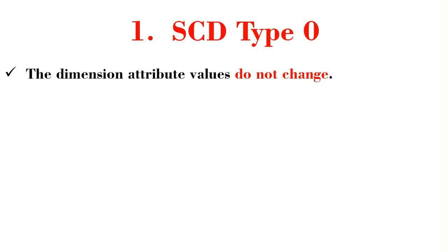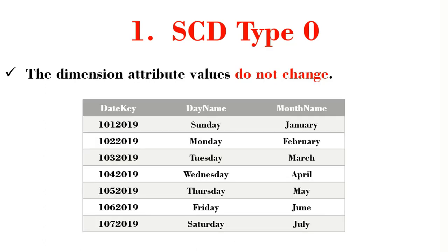I'm going to introduce you to five different types. The first one is type 0. With slowly changing dimension type 0, the dimension attribute values never change. This is typically seen in most attributes in a date dimension — for example, day name and month name. We all know these values never change, so this type of dimension is called type 0.